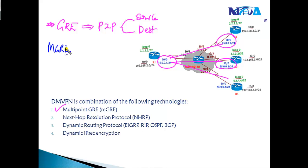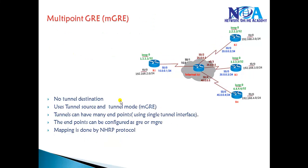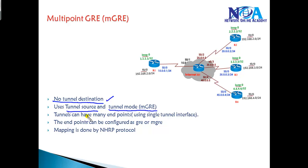In the case of Multipoint GRE, we use point-to-multipoint connections where we can have one source and multiple destinations. We don't configure destination commands; instead we use the 'tunnel mode GRE multipoint' command. There is also something called Next Hop Resolution Protocol (NHRP), and we use dynamic routing protocols as well. Optionally, if you want to encrypt your information, you can also use IPsec over Dynamic Multipoint VPNs.